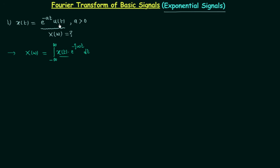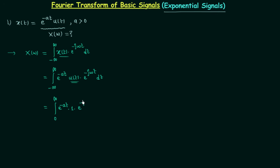Here x(t) is equal to e power minus at, u(t). So we will have integration minus infinity to infinity of e power minus at, u(t), multiplied by e power minus j omega t, dt. We know u(t) is equal to one from zero to infinity and zero from minus infinity to zero. So we can write the integration as zero to infinity: e power minus at times e power minus j omega t, dt. Combining the two exponentials, we have integration 0 to infinity of e power minus (a plus j omega) t, dt.